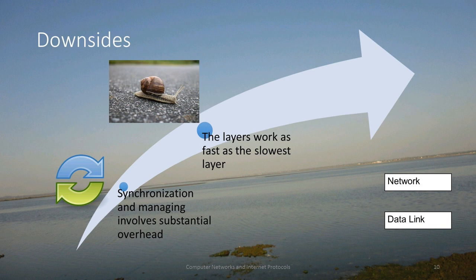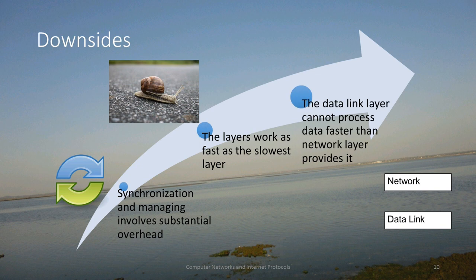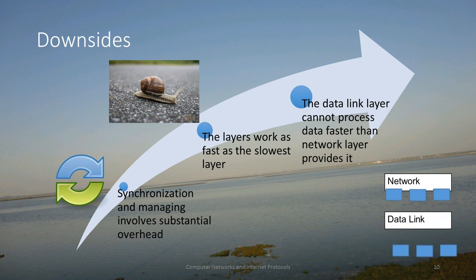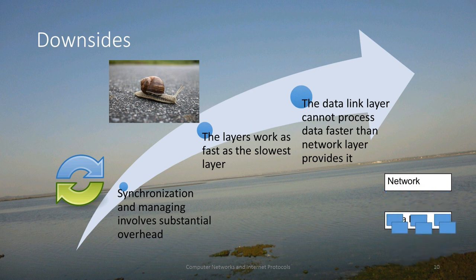The work of all these layers together will be as fast as the slowest layer. For example, with a network layer and a data link layer, if the data link layer starts working faster it cannot, because it only works as fast as the network layer is providing data — there is no point working faster. This is one of the biggest downsides of layered design.